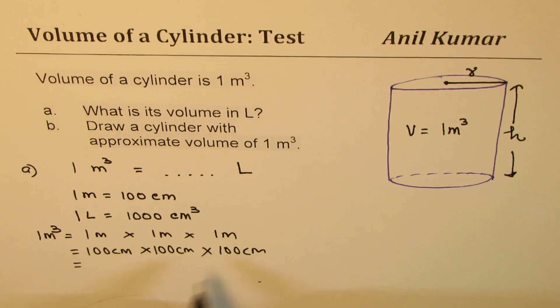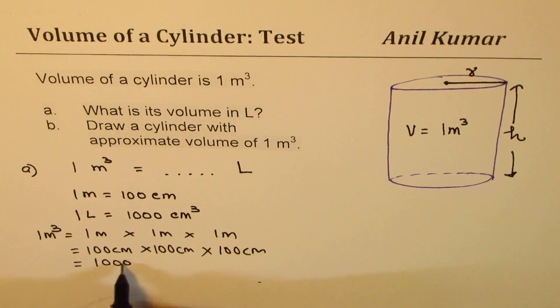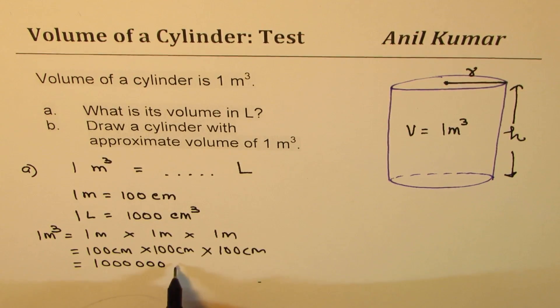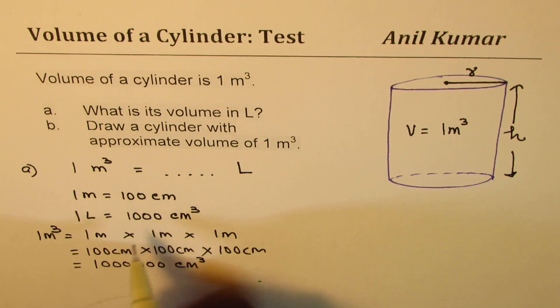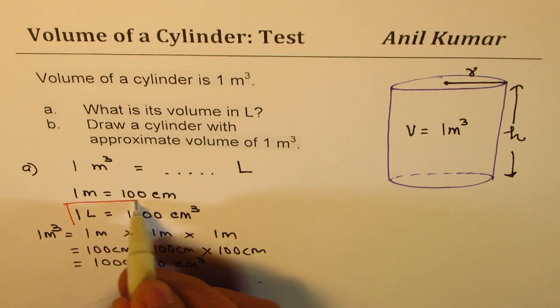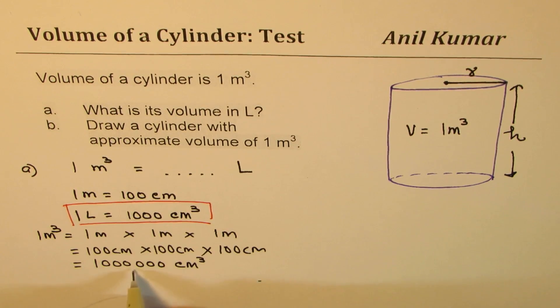So we have how many zeros? One, two, three, four, five, six. So we have 1000 and 1000 centimeter cube. But we want liters. Now, since we know that one liter is 1000 centimeter cube, so this portion could be written as liters. Do you see that?